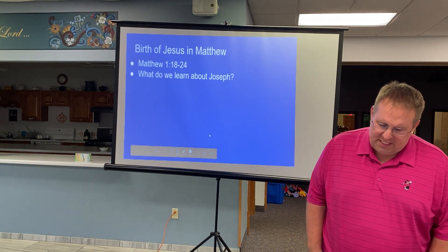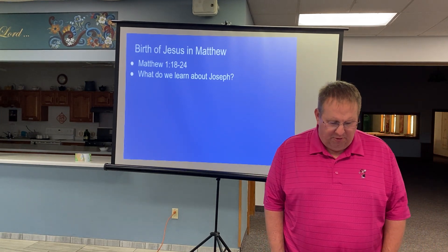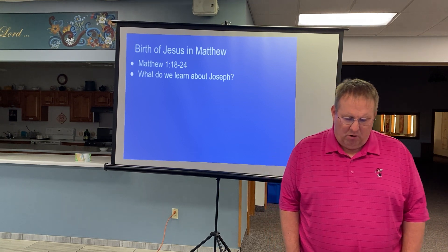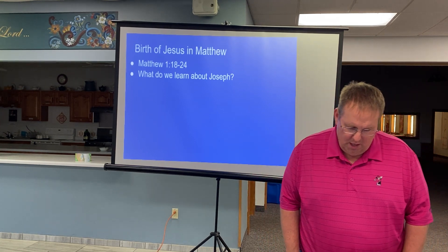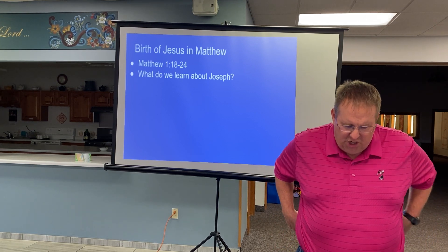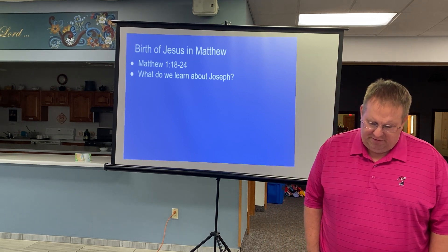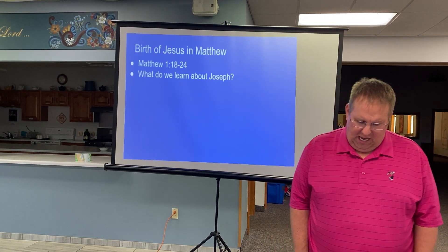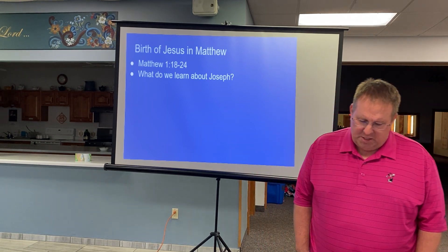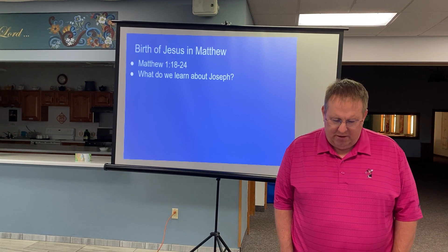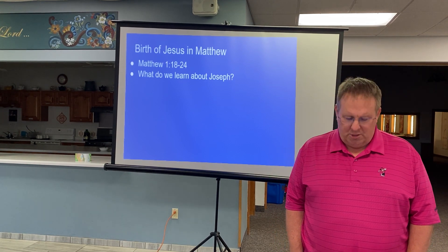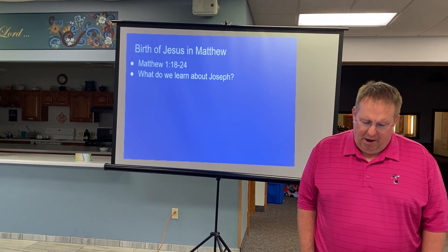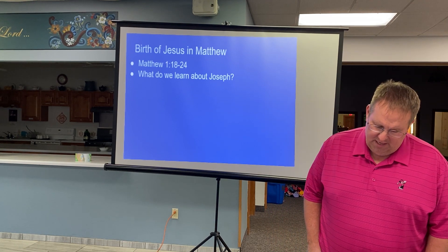The birth of Jesus the Messiah took place in this way: when his mother Mary had been engaged to Joseph, but before they lived together, she was found to be with child from the Holy Spirit. Her husband Joseph, being a righteous man and unwilling to expose her to public disgrace, planned to dismiss her quietly. But just when he had resolved to do this, an angel of the Lord appeared to him in a dream and said, 'Joseph, son of David, do not be afraid to take Mary as your wife, for the child conceived in her is from the Holy Spirit. She will bear a son and you are to name him Jesus, for he will save his people from their sins.' All this took place to fulfill what had been spoken by the Lord through the prophet: 'Look, the virgin shall conceive and bear a son, and they shall name him Emmanuel, which means God is with us.' When Joseph awoke from sleep, he did as the angel of the Lord commanded him. He took her as his wife, but had no marital relations with her until she bore a son, and he named him Jesus.